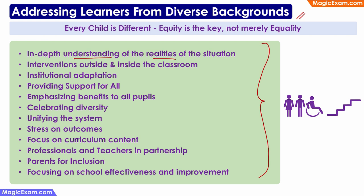They should know the realities of the situation, and wherever required, diversity and inclusive education should not just be inside the classroom but also outside it. Institutional adaptation means that the school and all its facilities should be adapted to meet the needs of inclusive education. Support should be provided for all, and emphasizing the benefits to all pupils means peer education, stress on outcomes, and focus on curriculum.